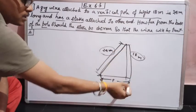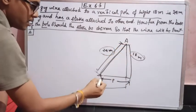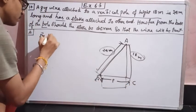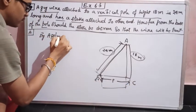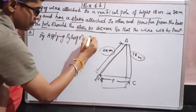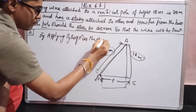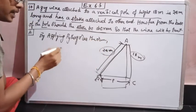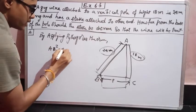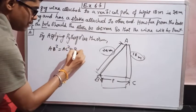I have hypotenuse, one side, and other side. If I consider this as A, B, C, by applying Pythagoras theorem to triangle ABC, then I will get AB² = AC² + BC².